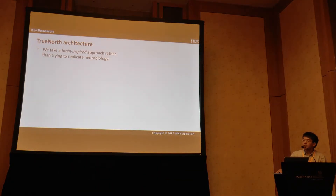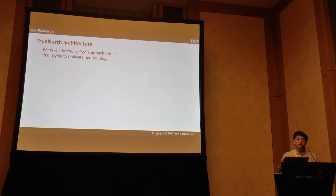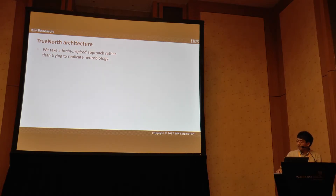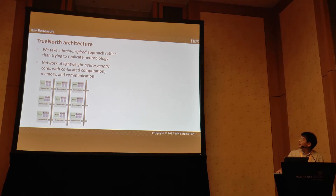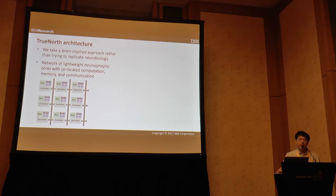So it's a neuromorphic chip — by this we mean it's a brain-inspired architecture. We're not trying to mimic or simulate neurobiology. We're trying to take some of the efficiencies of the brain's computation at low power. In particular, we're trying to break the von Neumann bottleneck by making a network of lightweight cores with all of the computation co-located with memory in each core.